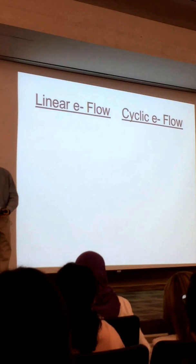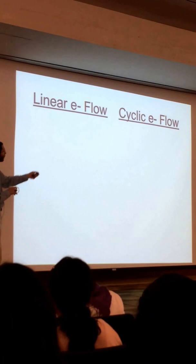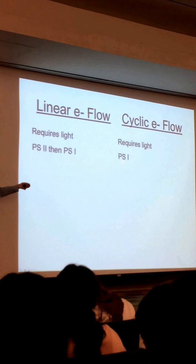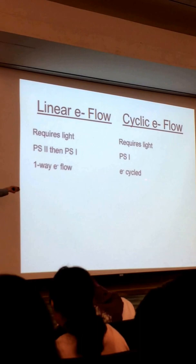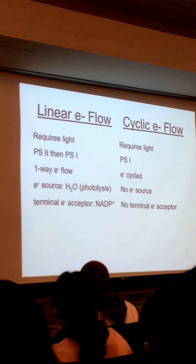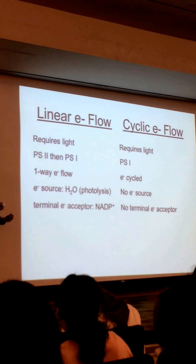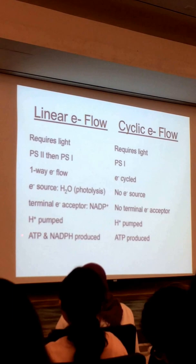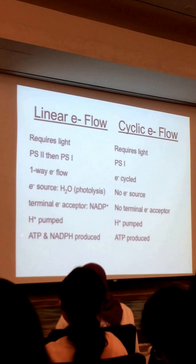Let's compare linear versus cyclic electron flow. Both require light, so both are part of the light-dependent reactions. Linear involves both photosystem II and photosystem I; cyclic is just photosystem I. In linear flow the electron moves linearly; in cyclic it cycles. Water is the electron source for linear flow; there is no electron source for cyclic. NADP+ is the terminal electron acceptor in linear flow; there is none in cyclic. ATP is made in both, but only linear electron flow also gives you NADPH.